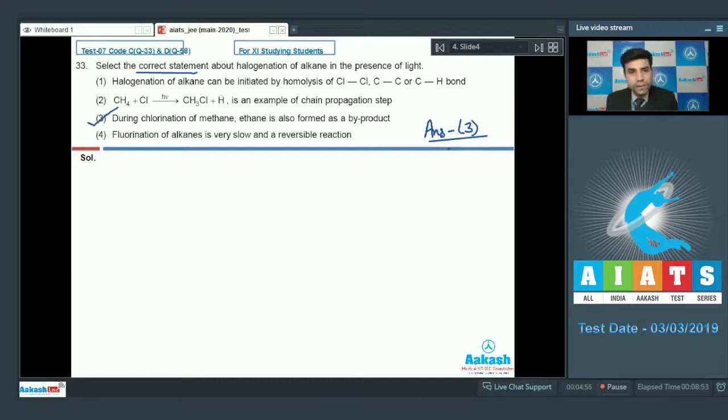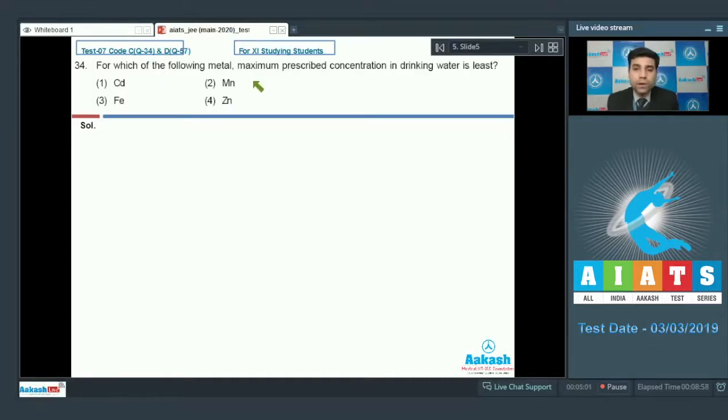Now let's move to the next question. This is the next question we have. It says for which of the following metal maximum prescribed concentration in drinking water is least. We have cadmium, iron, manganese and zinc.